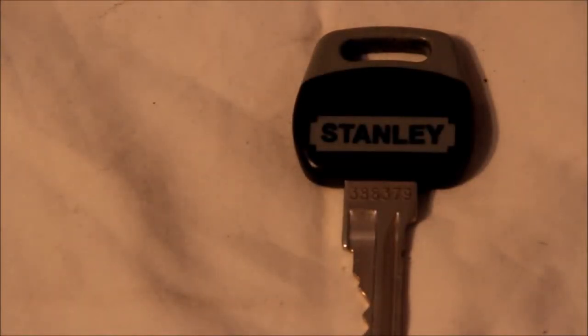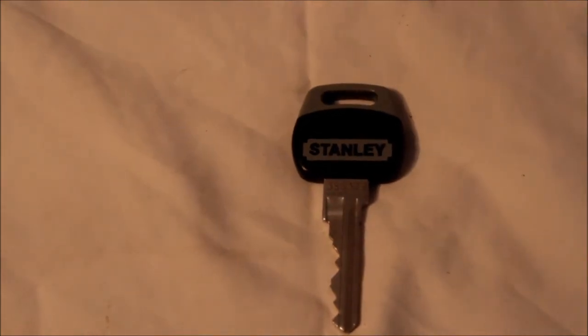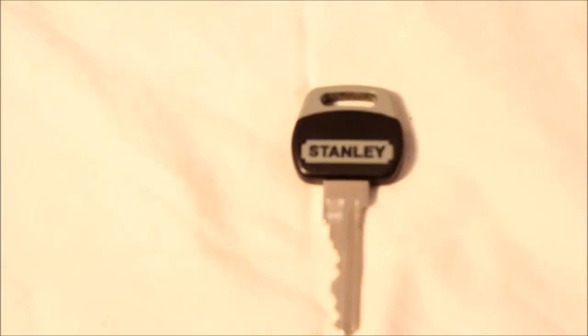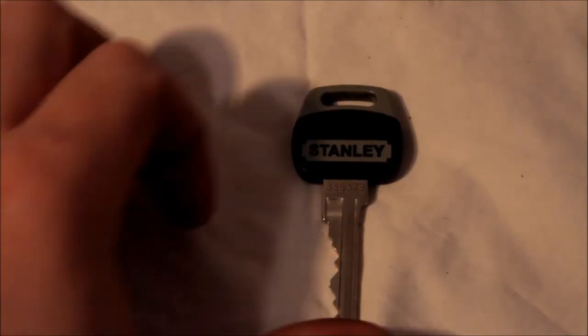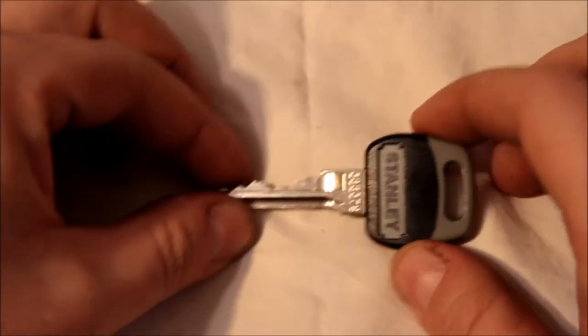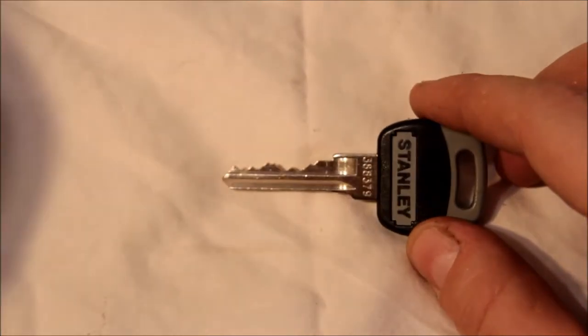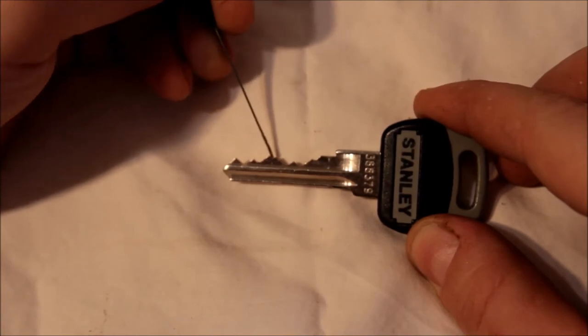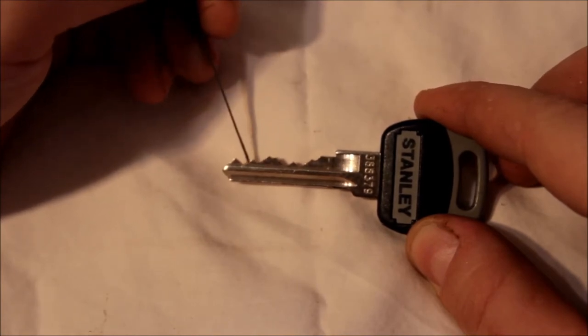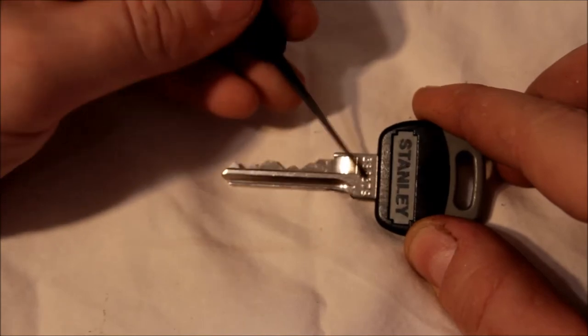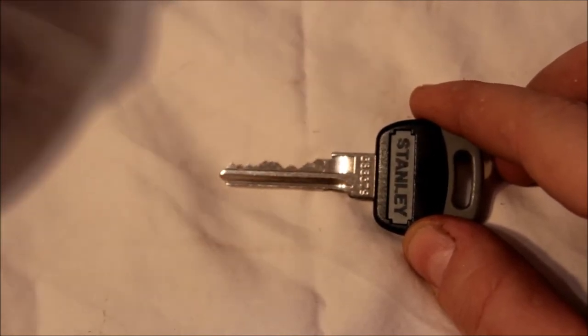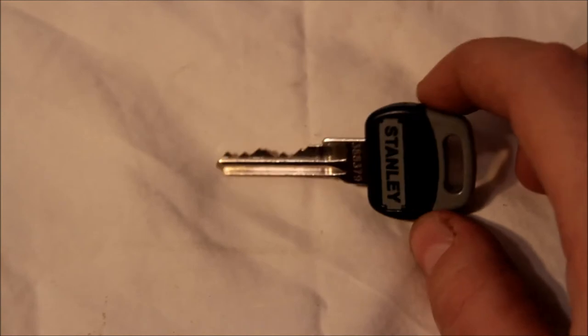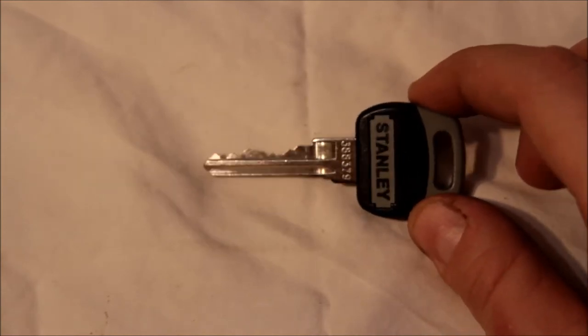Now, one aspect of any high security lock, or keying system I should say, is that the keys should not have direct bidding codes on them. So it's 388379. That's a direct bidding code. Makes it very easy, convenient to copy if you have a code machine. Also makes it very easy to copy if you just happen to know the number.